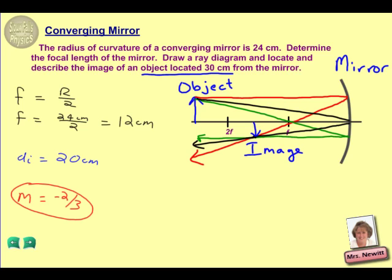When it says to describe the image, we already have a few factors for that. For instance, we have that the image distance is 20 centimeters. That matches up with our diagram. Our magnification was negative two-thirds.